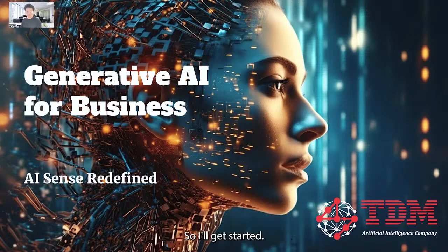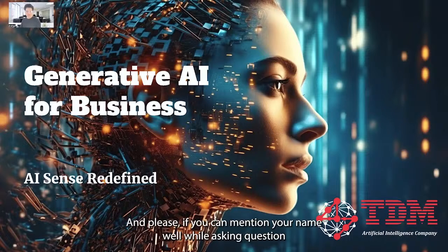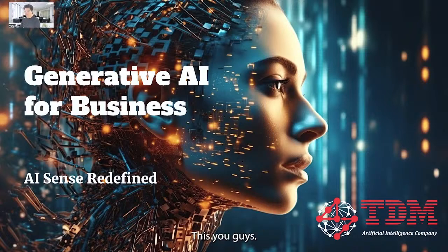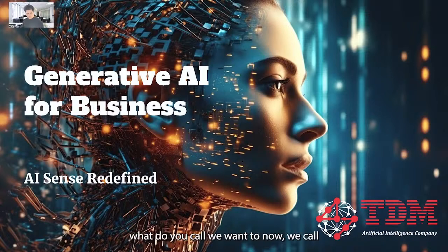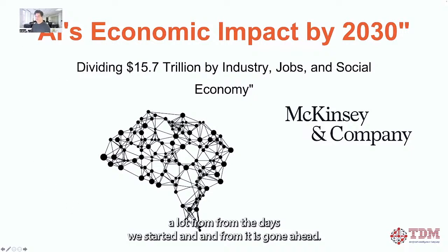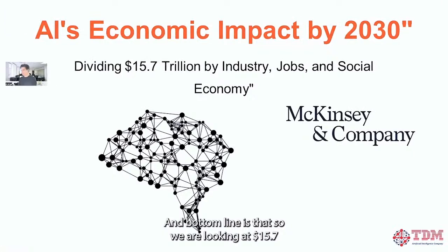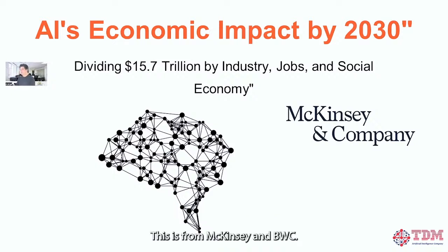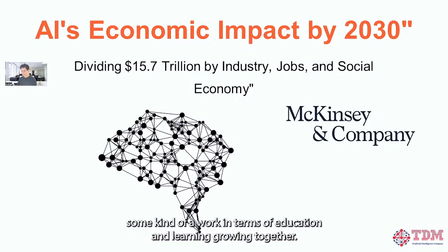It's already 1:04 so I'll get started. Please mention your name while asking questions — that's very helpful. Today's focus is generative AI for business. We call it AI sense-making, redefining since AI has moved forward a lot. We are looking at a $15.7 trillion economic shift in this industry by 2030 — this is from McKinsey and PwC. Very exciting time for people trying to do work in education, learning, and growing together.